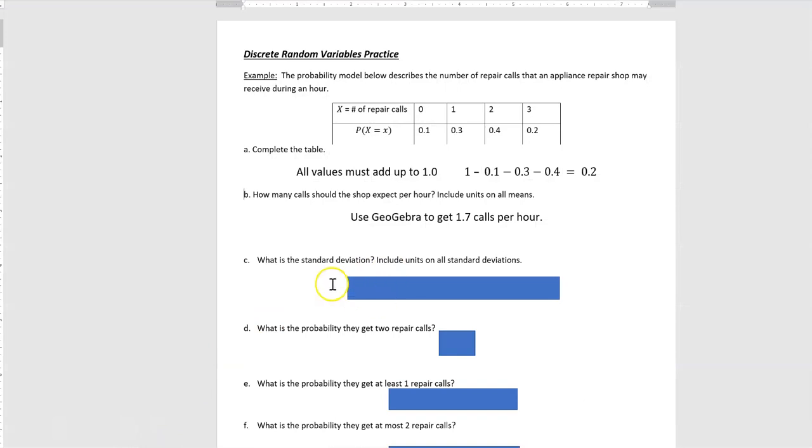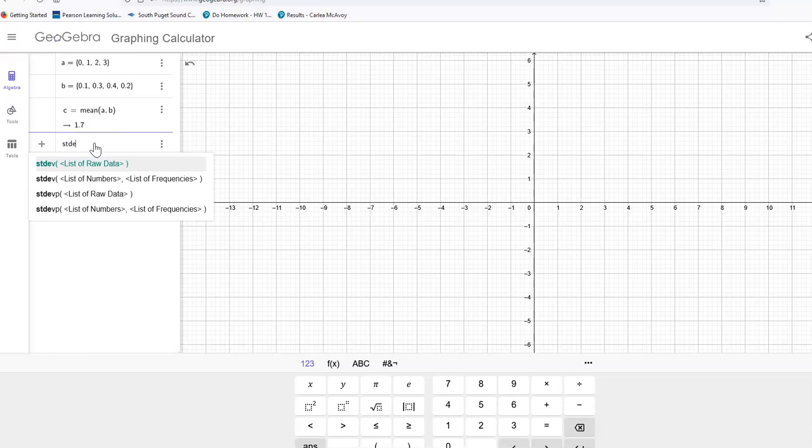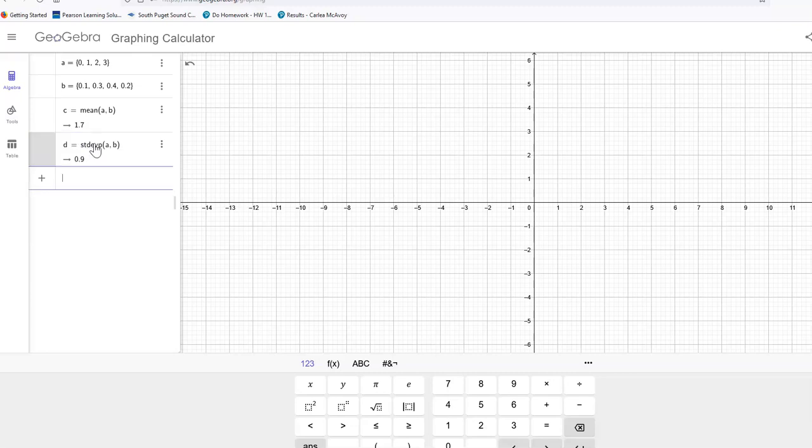Let's go back and see what our next question is. What is the standard deviation? Include units on all standard deviations, and so we're saying the units are calls per hour, right? So use GeoGebra to get 0.9. So let's see if we can do that. We're going to use the A and B again, but we're going to ask for standard deviation, S-T-D-E-V, and we want of the population, so I'm going to put that P in there. And because I have numbers and frequencies again, I'm going to put the A comma B, and that's going to give me that 0.9.